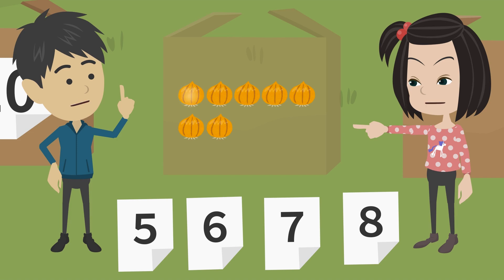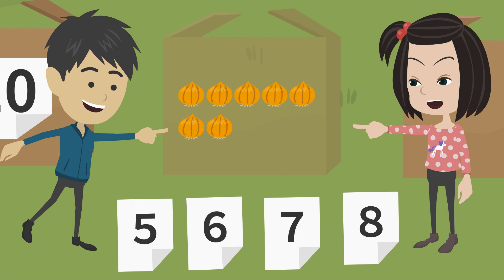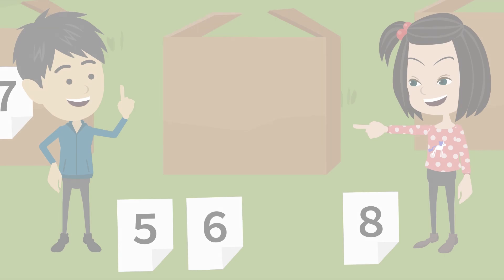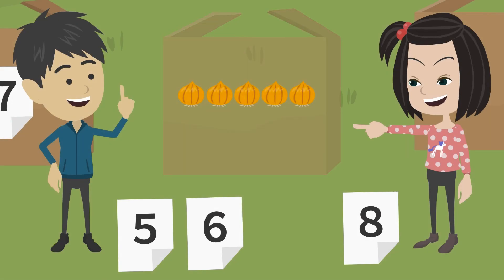So all we have to do is count the number of onions in each box. 1, 2, 3, 4, 5, 6, 7. There are 7 onions in this box. So the label that should be on this box is...